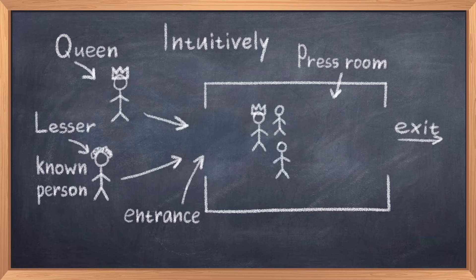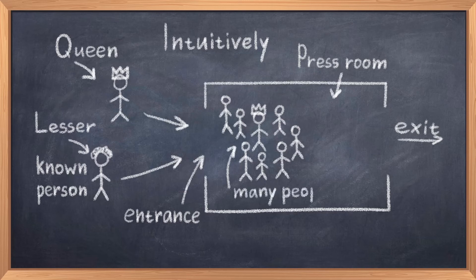Now suppose some lesser known person enters the press room. A few people would recognize this person, and therefore there won't be many people stopping this person from passing through the room, and thus this person corresponds to a lighter particle, like the electron or maybe the up quark.